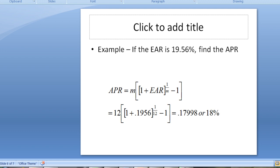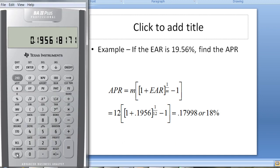So let's take a look at an example of that. Let's use what we've previously calculated, because we know what the APR is if the EAR is 19.56%. So let's just substitute in here, we're going to get 12 times 1 plus 0.1956 raised to the 1 twelfth power minus 1, you're going to get 0.17998, or if you round it off, 18%. And let's just check that on the calculator here.